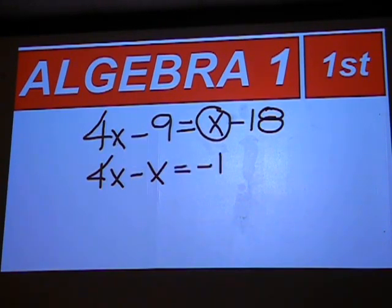Keep the minus 18 where it's at, it becomes negative 18. And move the minus 9 from the left over to the right side with it, but make it plus 9.